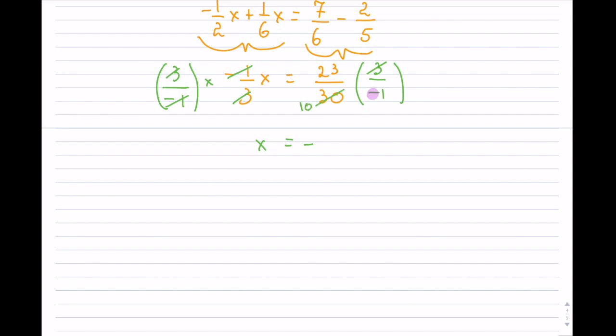So this actually turns out to be 23 over 10, and it is negative. If you have to change this back to a mixed number, then it will be 2 and 3 over 10, or you can maybe leave it as an improper fraction.